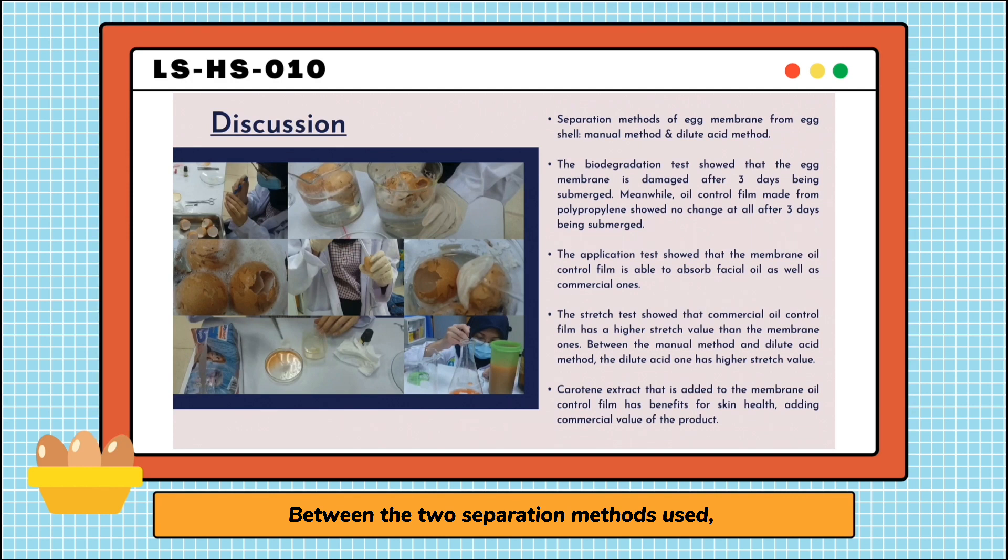Between the two separation methods used, we are able to take the whole membrane easily using the dilute acid method. The dilute acid helps to dissolve the calcium carbonate found in eggshells. For the manual method, we are only able to get the bottom part of the egg because that's the only part that is detached from the shell.